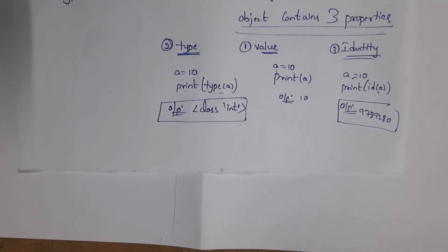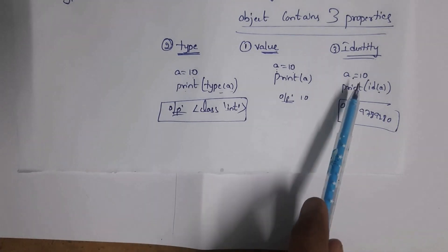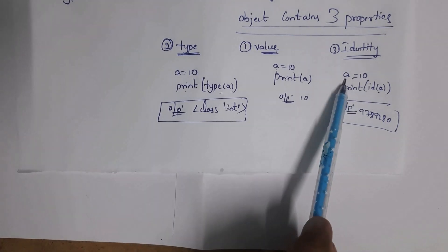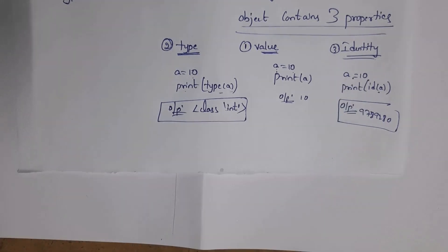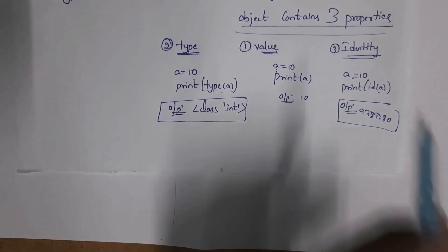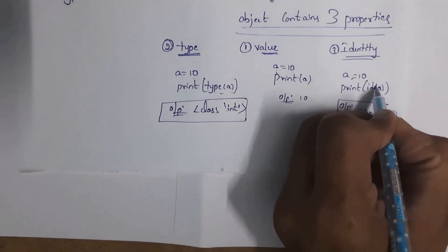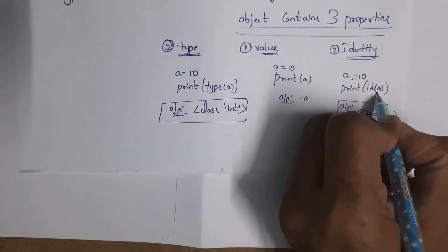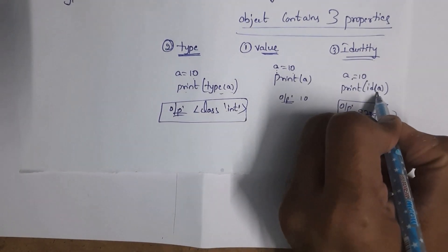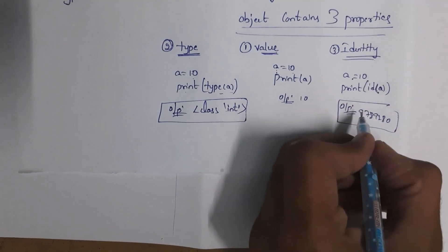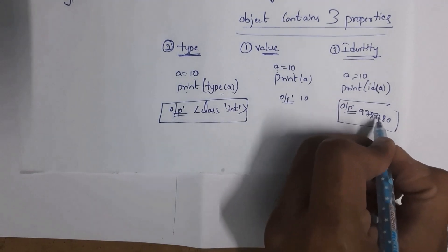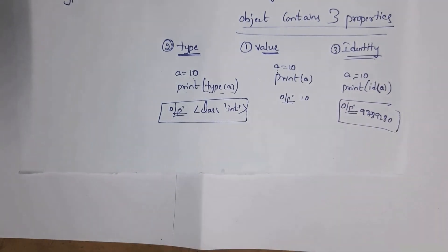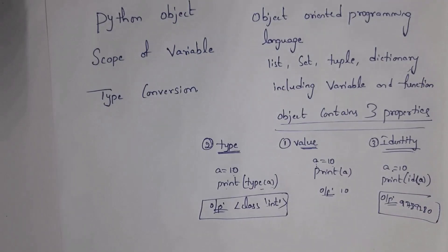The third and last property is identity. Identity is nothing but the address of an object. By using the id() function, you can find the address of a particular object. For example, if I write a = 10 and then print(id(a)), it will display a unique number as the address, such as 9789280. Each object has a unique identity.